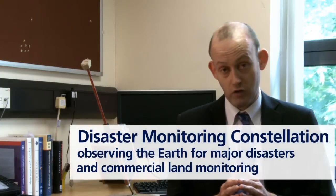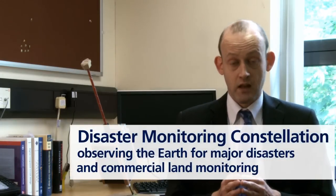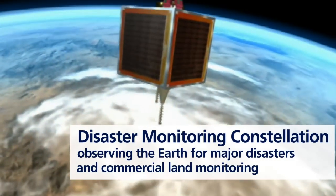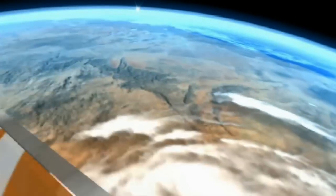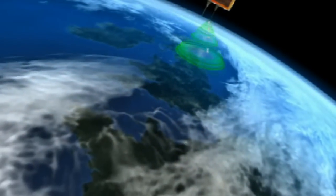SSTL has built a number of satellites that they call the Disaster Monitoring Constellation or DMCs and these DMC satellites have provided imagery in the aftermath of hurricanes, tsunamis, earthquakes, very useful imagery for disaster responders.